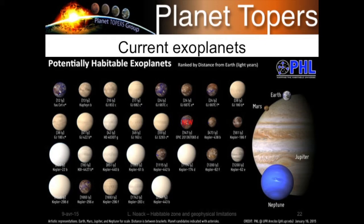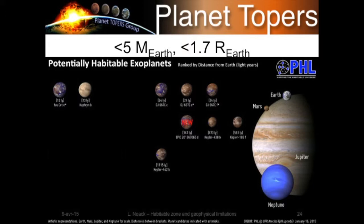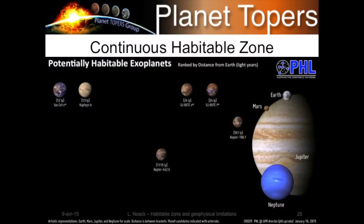Looking again at the potentially habitable exoplanets catalog, which planets are most potentially habitable? First, we check which are truly terrestrial — less than ten Earth masses and less than two Earth radii — and several candidates already drop out. Then, since large-mass planets are less likely to have a dense atmosphere, crossing out planets with more than five Earth masses or 1.57 Earth radii removes most of the remaining candidates. That doesn't mean those planets are uninhabitable, but focusing on the most likely candidates, and then applying the continuous habitable zone criterion of 10 billion years, we end up with six highly likely potentially habitable planets.